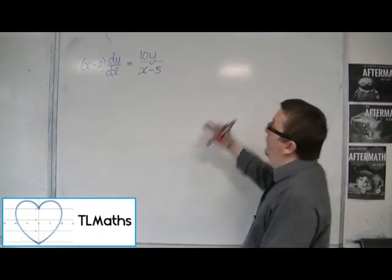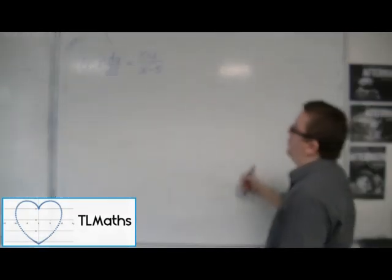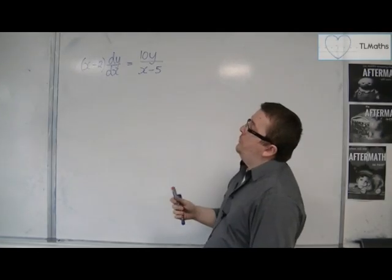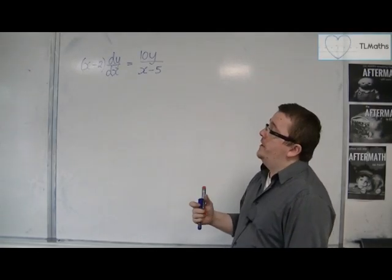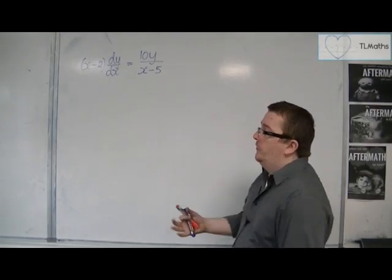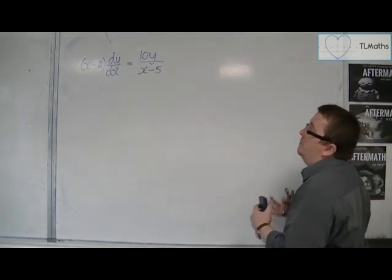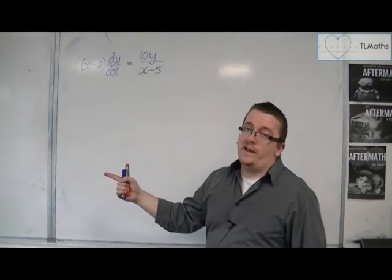Let's say I've been asked to find the general solution of this differential equation. So x minus 2 dy by dx is 10y over x minus 5. So we're going to use separation of variables again. We're going to move all the x's onto the right hand side and all the y's onto the left.